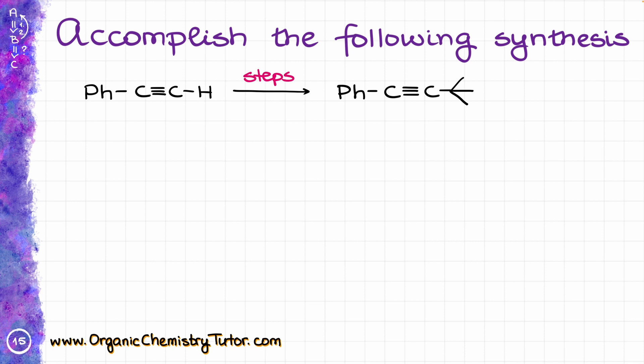You're probably thinking this synthesis is quite trivial. We'll take our starting material, deprotonate it with something like sodium hydride or sodium amide, which will give us the corresponding anionic species, and then react it with our alkyl halide to give us the final product.